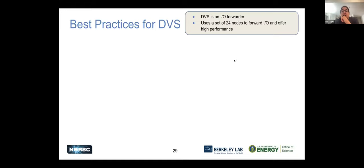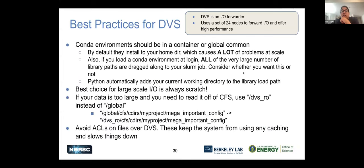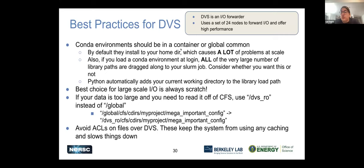DVS is a special IO forwarder on our system that requires a little bit of special usage. To use the system in the best way, you may not have to think about this much — if you do these things, you'll get good performance and won't see issues. For example, conda environments should be in a container or in global common software. If you install them in your home directory it can cause problems, especially at scale. In general, if you can run out of Scratch, this DVS IO forwarder will just do its thing in the background.